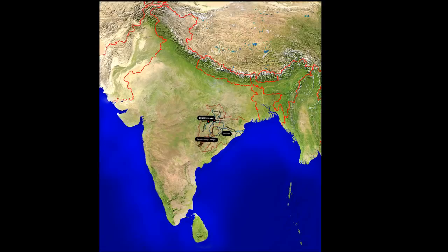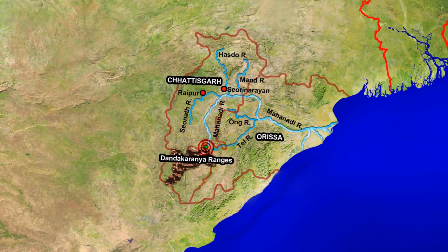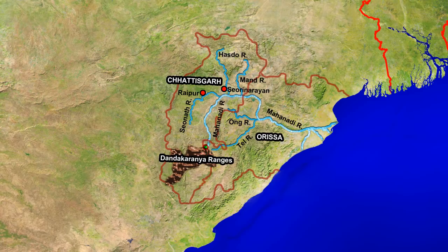Now let us study about the peninsular rivers in brief. The Mahanadi originates in the Dandkaranya range in Raipur district of Chhattisgarh. Its tributaries on the left bank are Siyonath, Hasto and Mand, and on the right bank are Ong, Tel River and Jhonk River. From its source, the river takes a north-easterly course, and beyond Siori Narayan it flows eastwards, enters Orissa and finally empties itself into the Bay of Bengal.